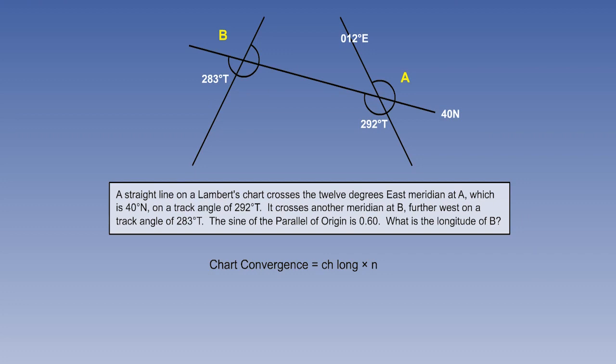Once we've got the diagram, write the equation down. Chart convergence equals change of longitude times sine parallel of origin. We know the chart convergence. The track changes from 292 degrees to 283 degrees. That's a change of 9 degrees.